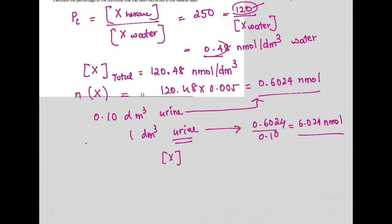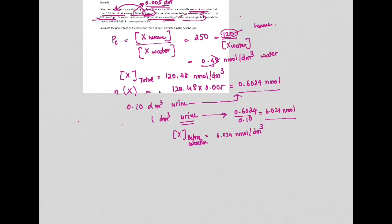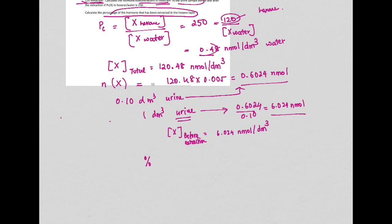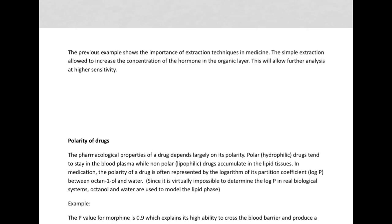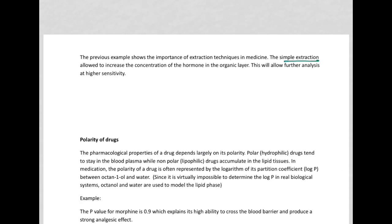To find the percentage of hormone extracted in the hexane layer, we're just going to take the amount of X in hexane, which is this one, amount of X in hexane, over the total amount of X. So as we can see, the amount of X in the hexane layer is very high. So it shows that simple extraction can increase the concentration of the hormone in the organic layer, which allows further analysis at higher sensitivity.